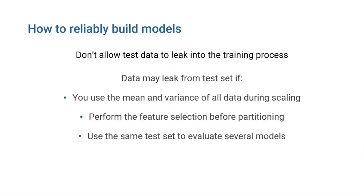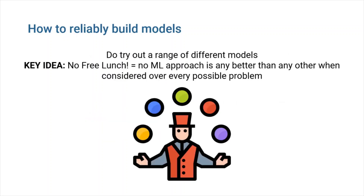There are a number of ways that information can leak from a test set. The best thing to prevent these issues is to partition off a subset of your data right at the start of your project. This way, you can only use this independent test set once to measure the generality of a single model. Do try out a range of different models. There's no such thing as a single best ML model for every problem. The no free lunch theorem shows that no ML approach is better than any other when considered over every possible problem. Given that modern Python ML packages make it easy to try out various models with very little code modification, there's no reason not to do so.